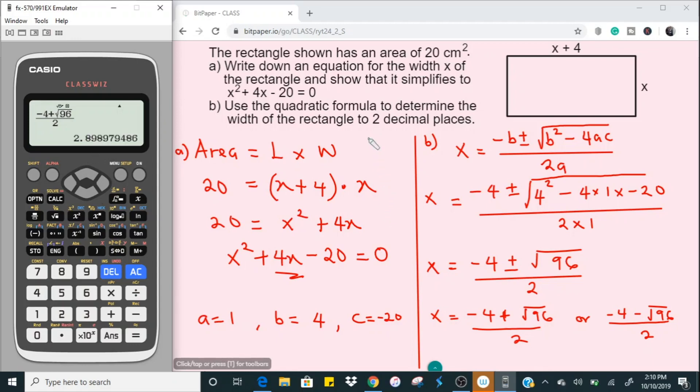But we need to write this to 2 decimal places, and 2 decimal places, definitely this is going to give me 3.0. So this is going to be 3.00. Of course, it's going to be centimeters.